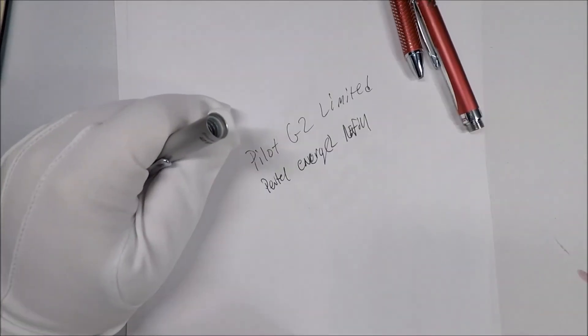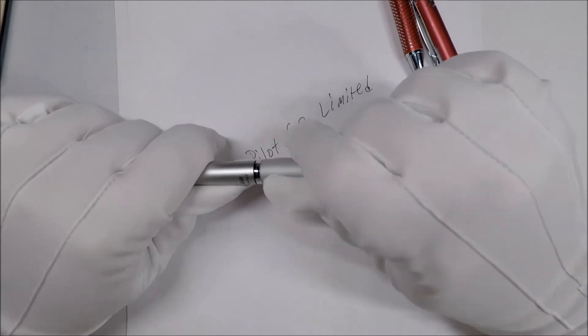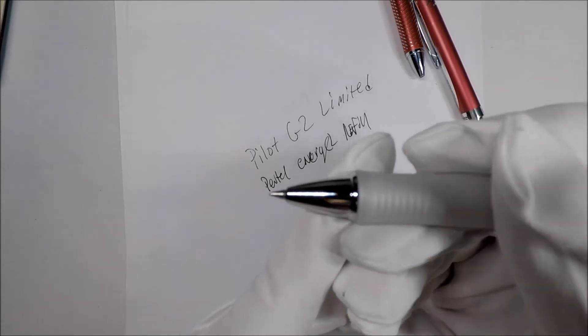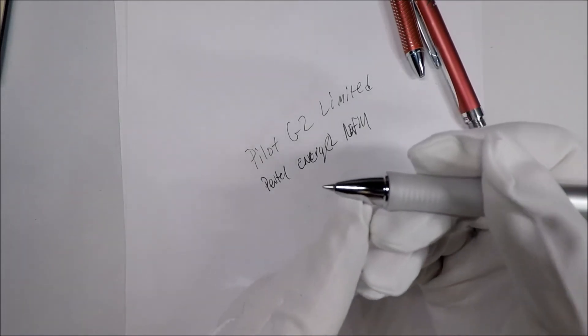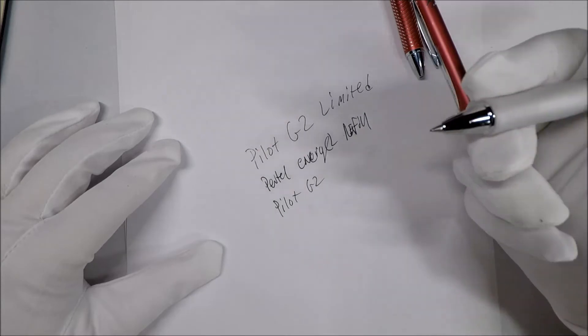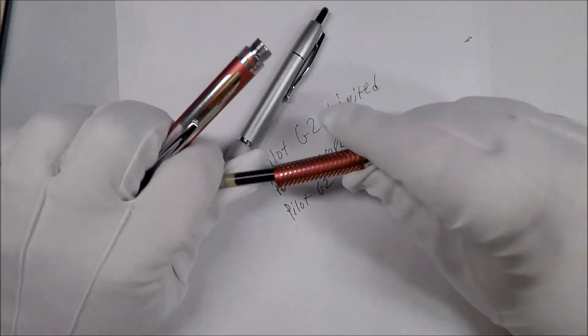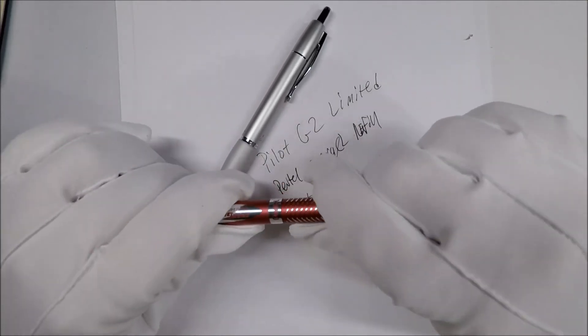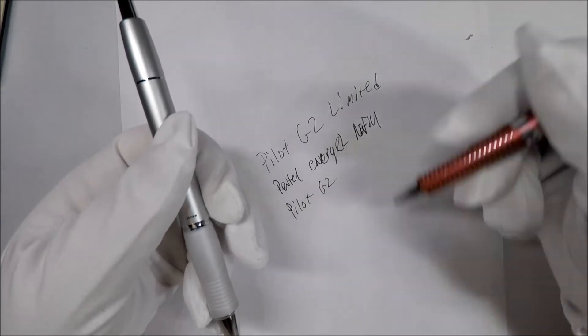This thing writes pretty much like a G2. It's very comfortable to write with. So if you remember, when you look at the point, the Energel tip sticks out just a tiny bit but not much extra. Both of them seem like really good pens. They're enjoyable to write with. I think the difference will just be personal preference. The Energel is smoother, it slides a little better as you write.